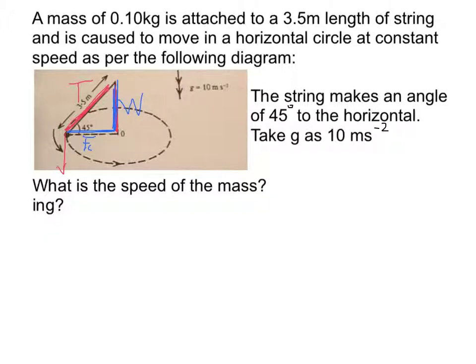So we have the equation, centripetal force is equal to mv squared over r. But we know that that's going to be equal to the weight. So we have 0.1 multiplied by v squared over the radius will be equal to our weight. And the weight was equal to 0.1 times by 10, which equals 1 newton.